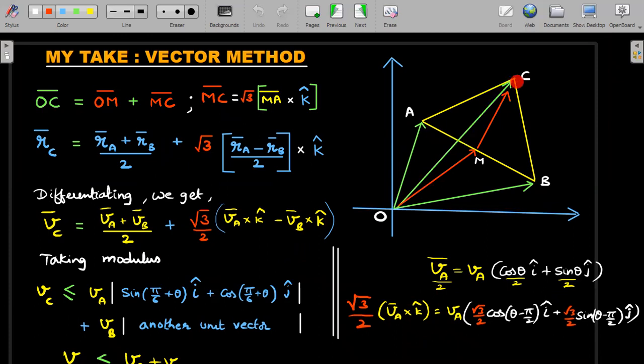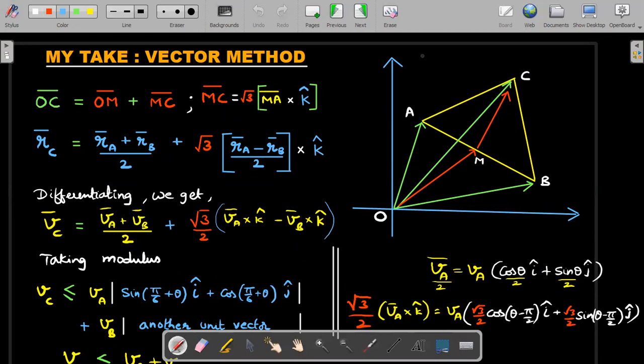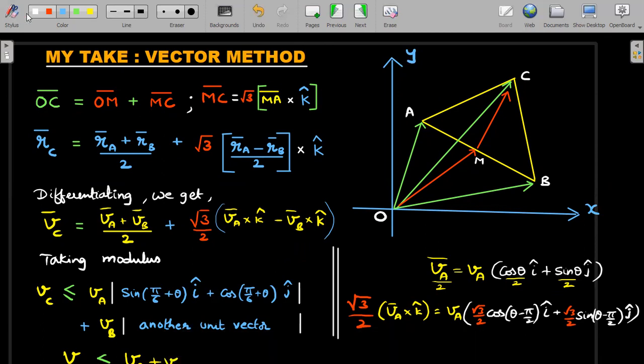Again, ABC can be any orientation, any size. In this particular triangle I have written intentionally the ABC in an anti-clockwise sense. So OC vector, which is the position of ant C, is equal to OM vector plus MC vector. Let me explain - this red vector plus this red vector. What's the speciality of this red vector? M is the midpoint of AB and M to C is the perpendicular bisector or the altitude, because it's an equilateral triangle. But MC vector can also be written in terms of MA vector cross k-cap. Assume this is the xy plane.